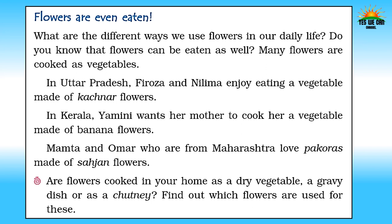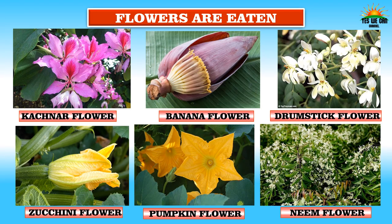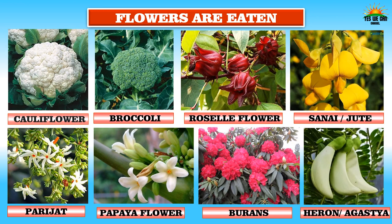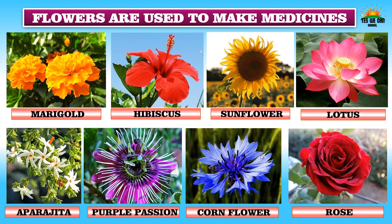Many flowers are cooked as vegetables. In Uttar Pradesh, Feroza and Neelima enjoy eating a vegetable made of kachnar flowers. In Kerala, Yamini wants her mother to cook a vegetable made of banana flowers. Mamta and Omar from Maharashtra love pakoras made of sahajan flowers. Are flowers cooked in your home — as a dry vegetable, a gravy dish, or a chutney? Edible flowers include kachnar, banana flower, drumstick flower, zucchini flower, pumpkin flower, neem flower, cauliflower, broccoli, roselle, sanai or jute flower, parijat, papaya flower, burans, hiran, and agastya flowers.